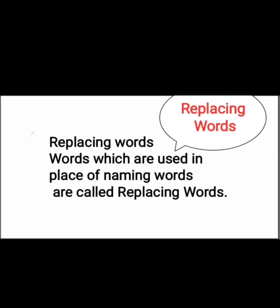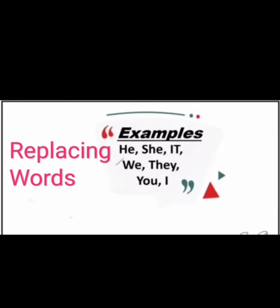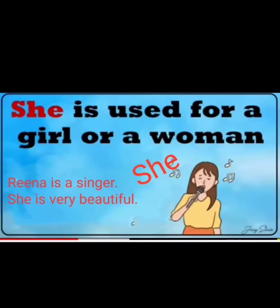Now we will understand replacing words with examples. Here is a girl and her name is Rina. Rina is a singer. She is very beautiful. So instead of Rina, 'she' is used. It means that 'she' is used for a girl or a woman.